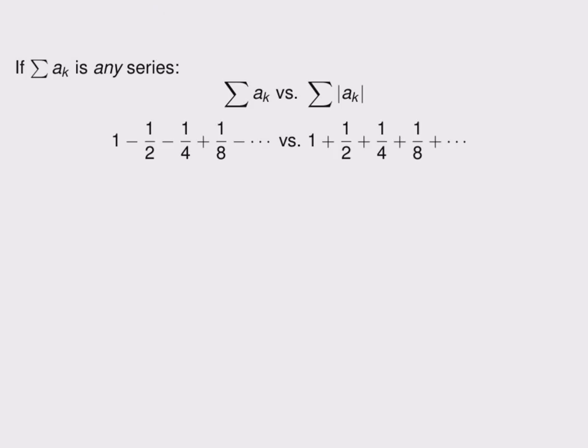Finally, we'll take a look at a related type of series. If the series a_k is any series, that is, it's not necessarily alternating, it could have both positive and negative terms in any pattern, then we can look at a related series in which we put absolute values on every term.